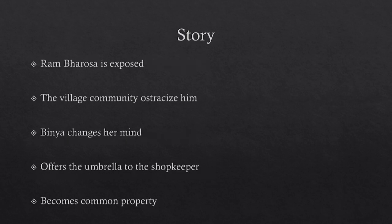After that, Ram Barossa is exposed to the entire village as the man who went after a little girl's possession. He is ostracized by the entire community, nobody visits his shop, and he is completely woebegone and on the verge of financial bankruptcy. Binya observes these changes and eventually offers her favourite blue umbrella back to the shopkeeper. At the end, Ram Barossa makes the umbrella the common property of the entire village — whoever wants to use it can borrow it from the shop.